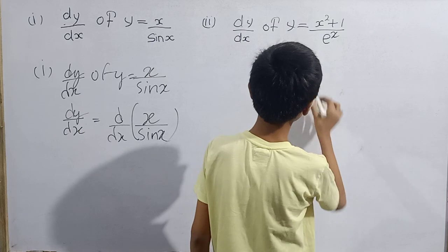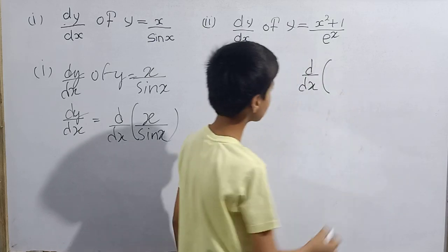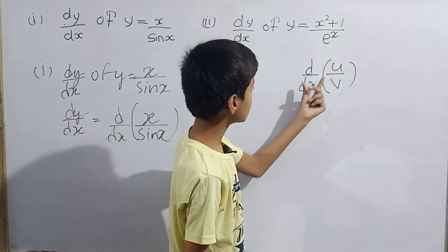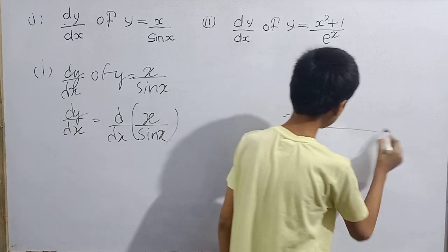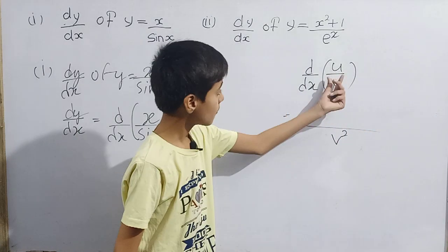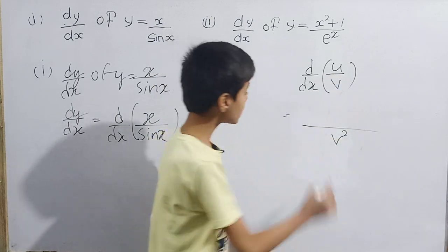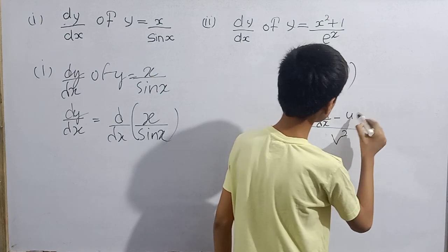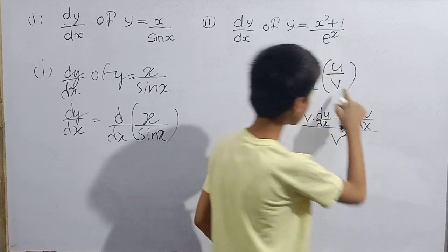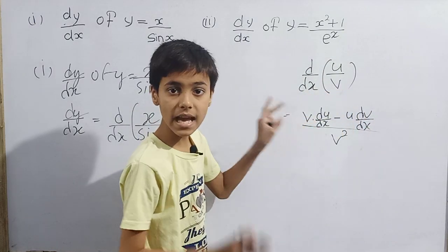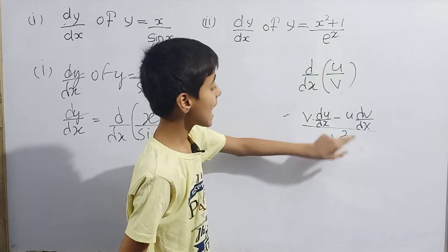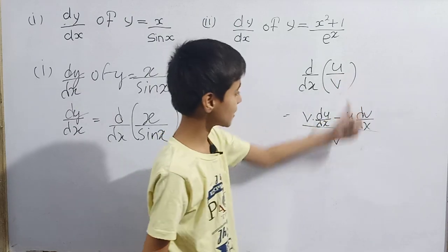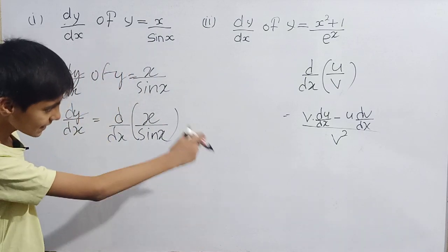Let me write the formula for the u/v method. The differentiation of u/v with respect to x equals, in the denominator, v squared. In the numerator: v multiplied by du/dx, minus u multiplied by dv/dx. So first v squared in the denominator, then v times the differential of u, subtracted by u times the differential of v.